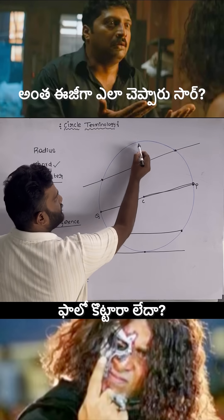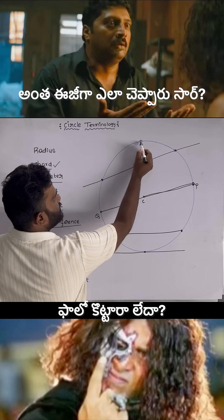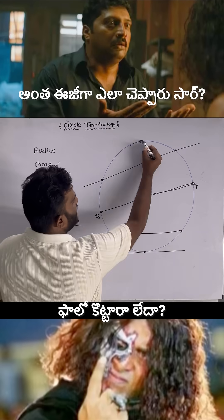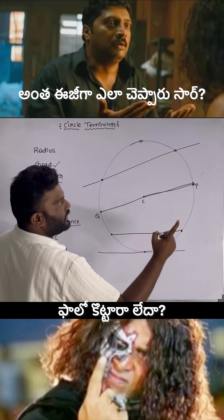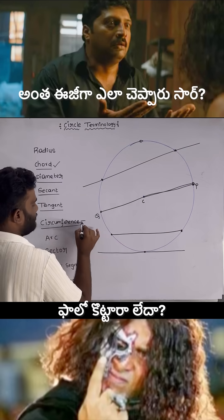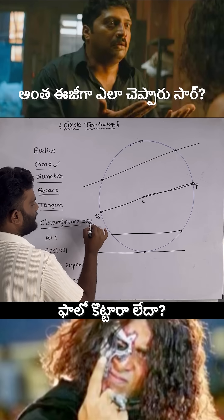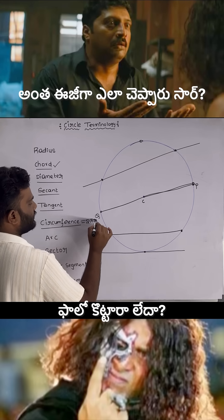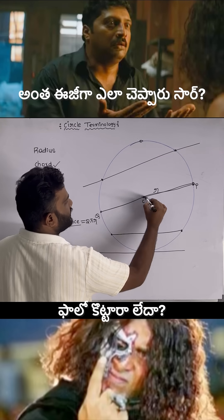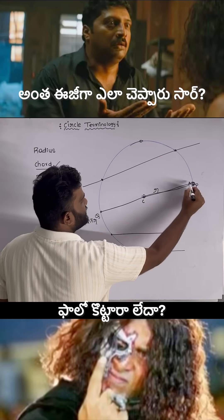Circumference: the complete round distance around the circle. This can be calculated using the formula 2πr, where r is the radius — the distance from the center to any point on the circle.